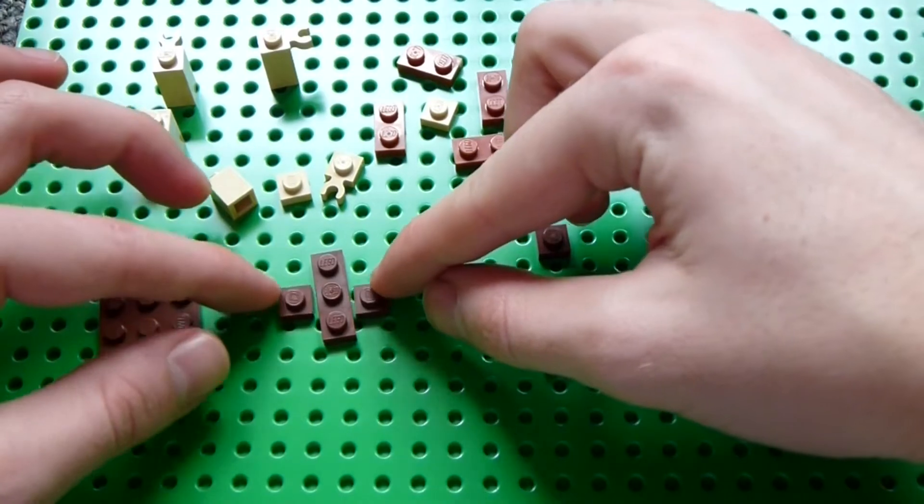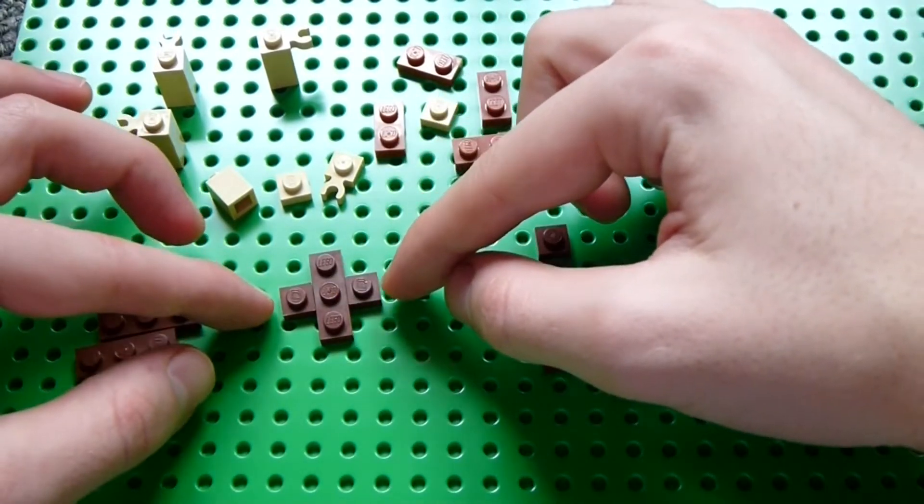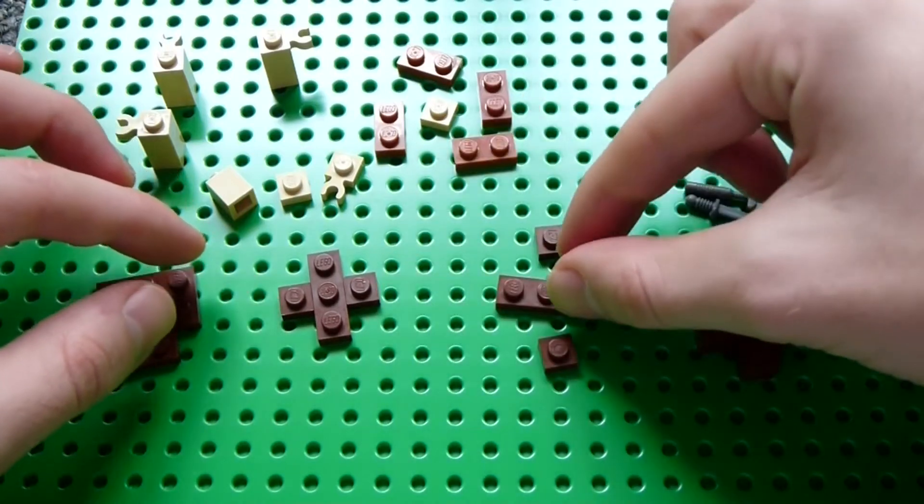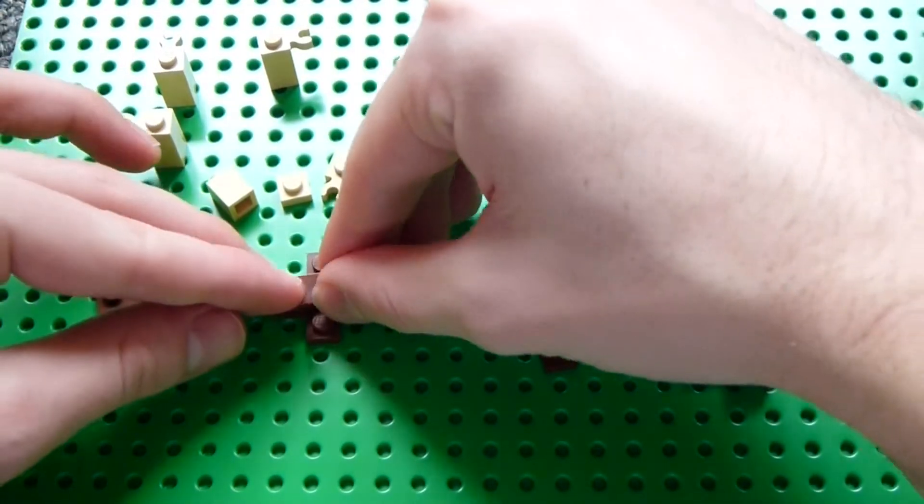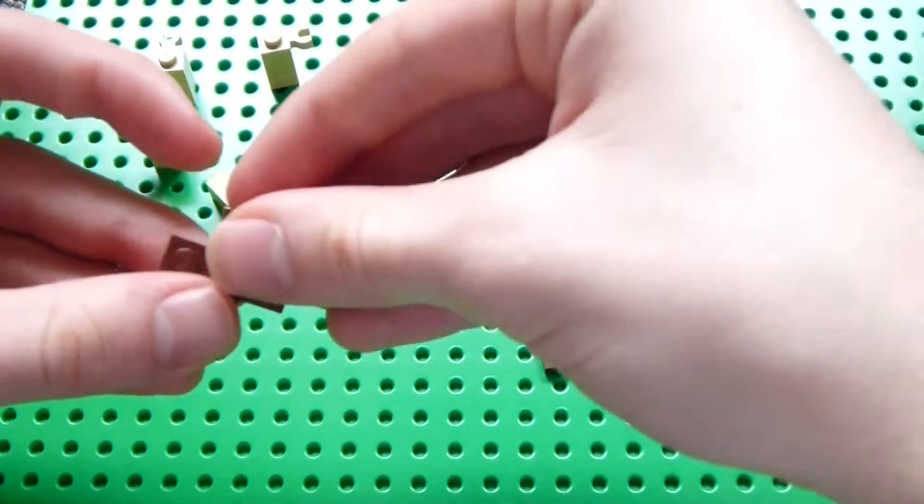And then we're going to want to make a reddish brown cross. So we'll take a 1x3 and put two 1x1s on the side, and then make another one of those, but stack them so that when they're placed on top of each other it's stable.